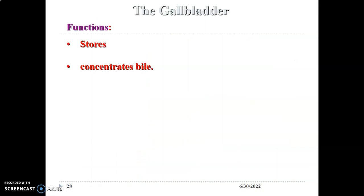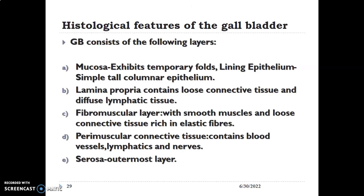The gallbladder stores and concentrates bile. Because of this ability to concentrate bile, the lining cells have features of ion-transporting cells. The simple columnar epithelium of the gallbladder has features such as basal invagination and an apical brush border or microvilli. The histological layers of the gallbladder wall include: the mucosa, which is thrown into temporary folds that disappear when the gallbladder is distended; below the epithelium, you have the lamina propria made up of loose connective tissue and lymphatic tissue.